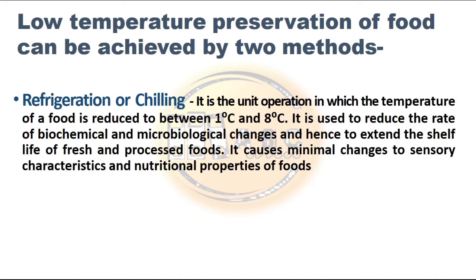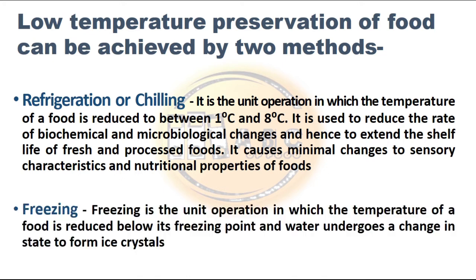Low temperature preservation of food can be achieved by two methods. First is refrigeration or chilling — a unit operation in which the temperature of a food is reduced to between 1°C and 8°C — used to reduce the rate of biochemical and microbiological changes and hence to extend the shelf life of fresh and processed foods. It causes minimal changes to sensory characteristics and nutritional properties.